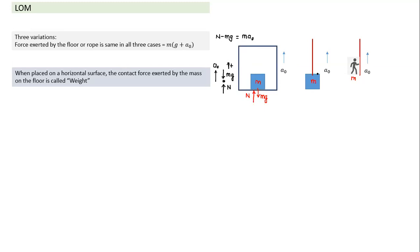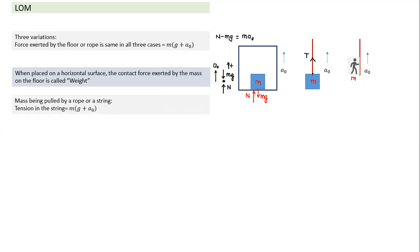In the second case, the object is not placed on a horizontal surface — it is connected with a string, as happens in a lift, and has an upward acceleration of a₀. Here the upward force was exerted by normal reaction in case one, but now the net upward force is exerted by tension in the string. So tension in the string also will be equal to m(g + a₀). If the direction of acceleration is downwards, tension becomes m(g − a₀).